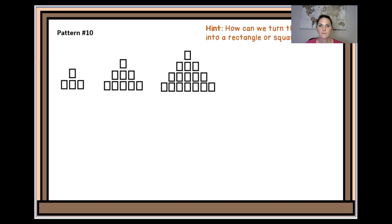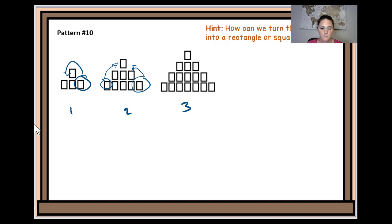Okay, let's look at our next example. For this next pattern, the hint is: how can we turn this into a rectangle or a square? I'm going to take this extra block and move it to the empty space, and do the same in the other steps — moving those extra blocks to the empty space to make a square or rectangle. So in position 1 we get a 2 by 2, position 2 gives a 3 by 3, position 3 gives a 4 by 4. So it looks like we're going to have position number plus 1 again.